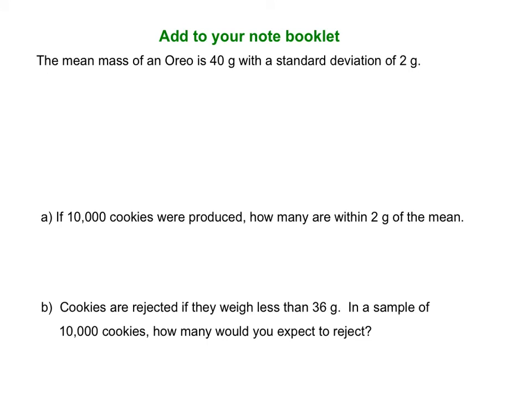This next example is not in your notebooklet, so open up to the back where there are some blank pages and add this example there. You're going to see some problems like this on your homework later, so it's important that you write this one down. Suppose that the mean mass of an Oreo is 40 grams with a standard deviation of 2 grams.